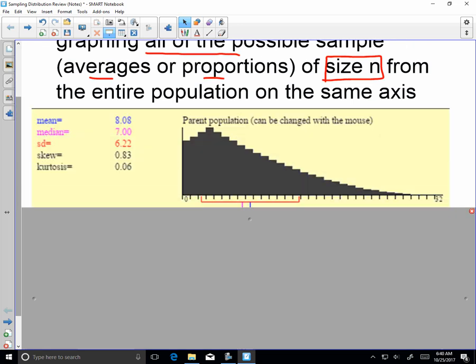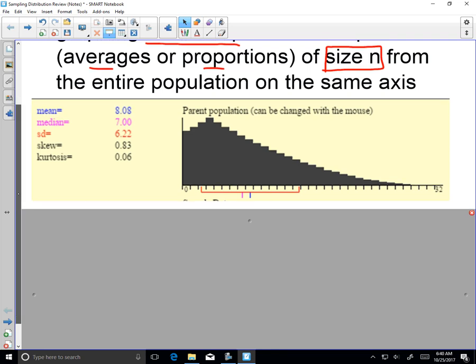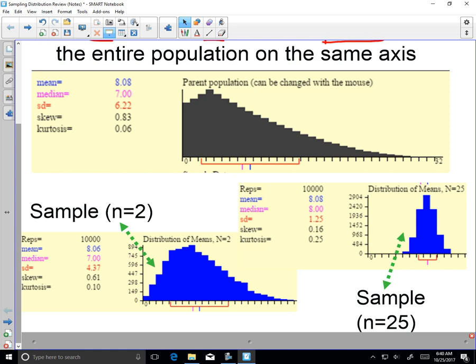So if we look at our population, this population is skewed right. If we want to do a sampling distribution from this, what we're going to have to do is we can sample different sizes.